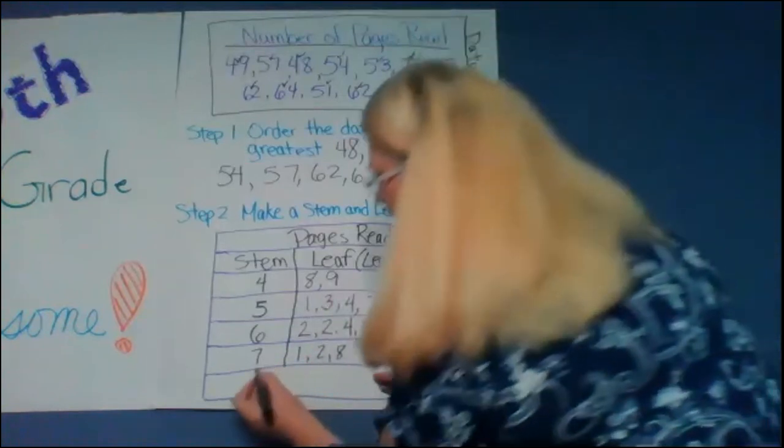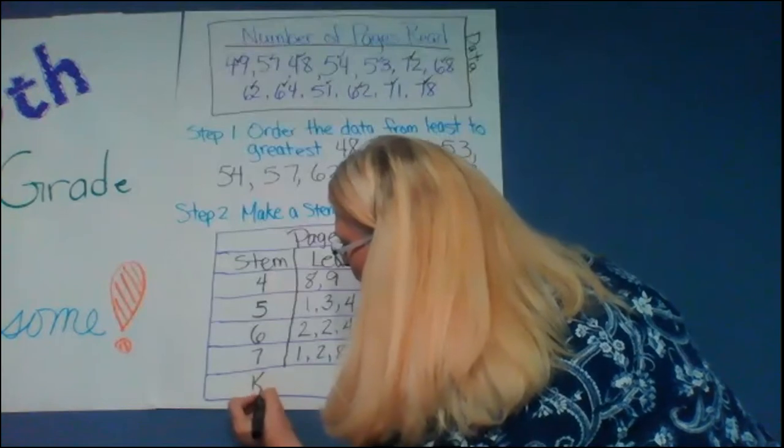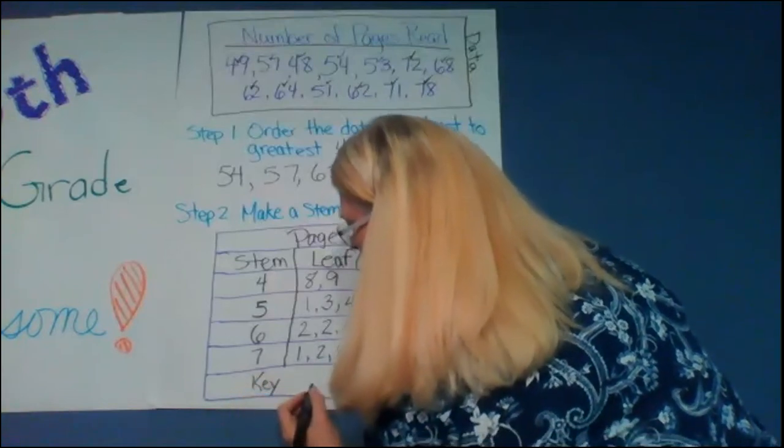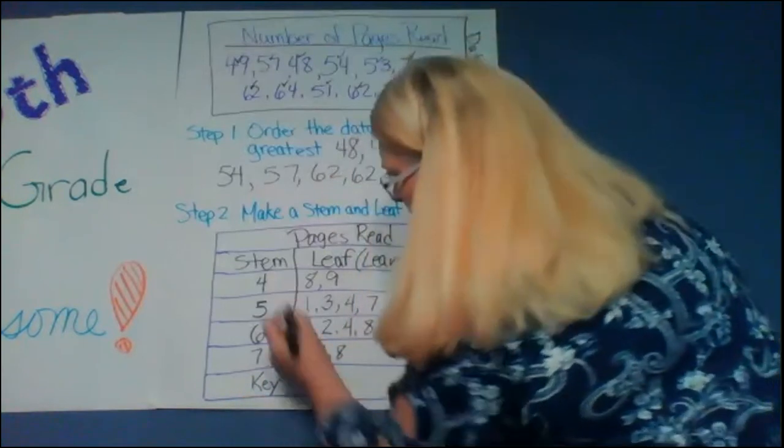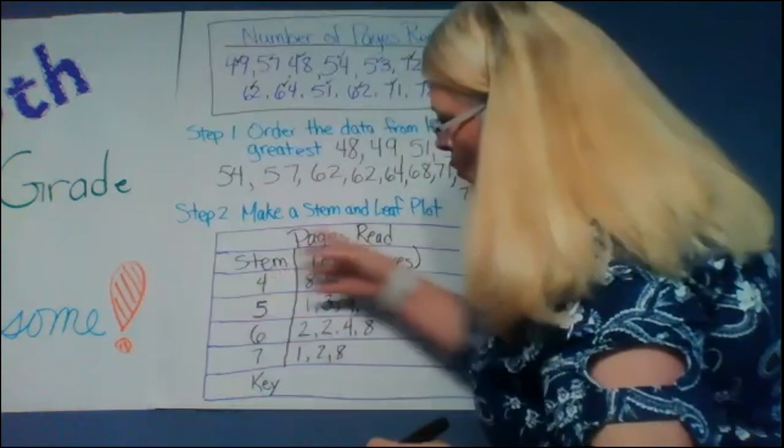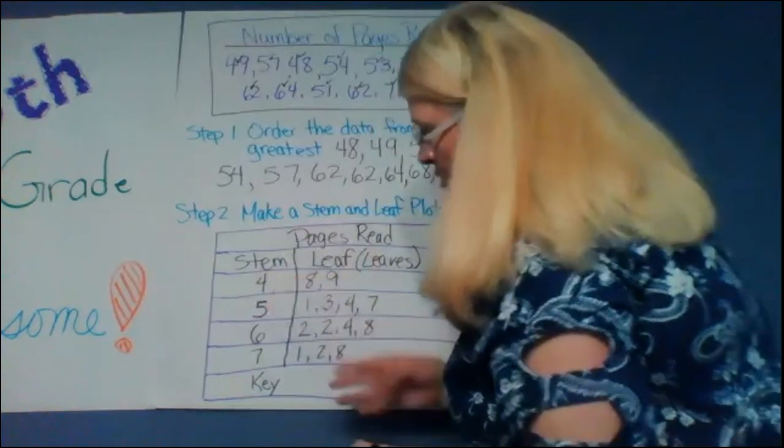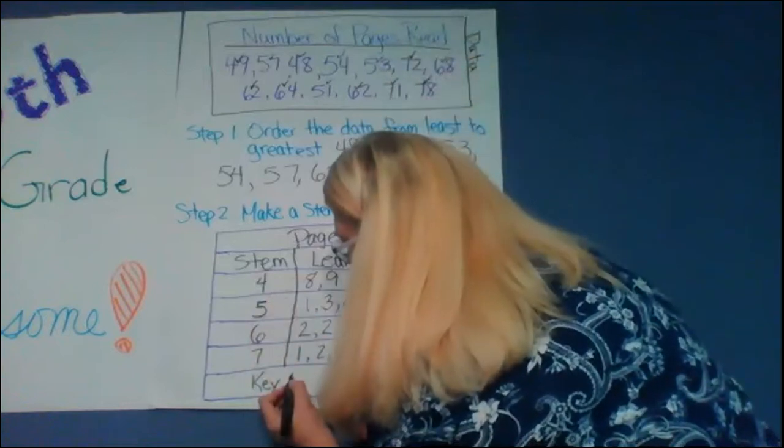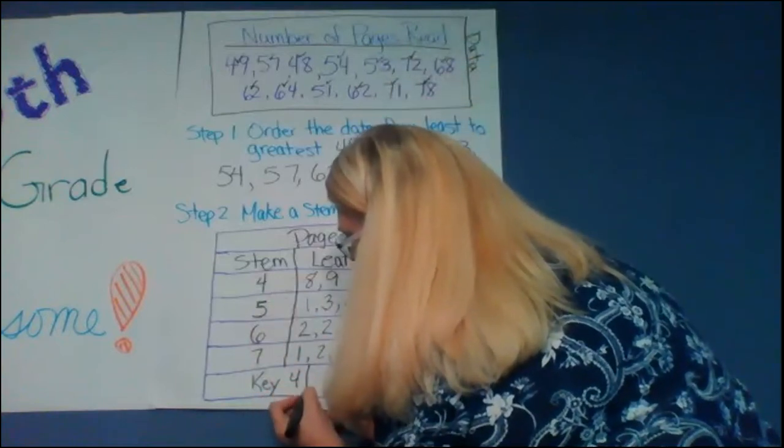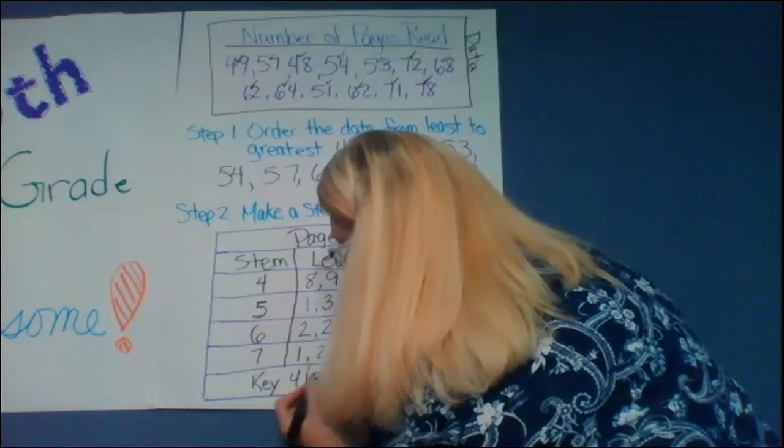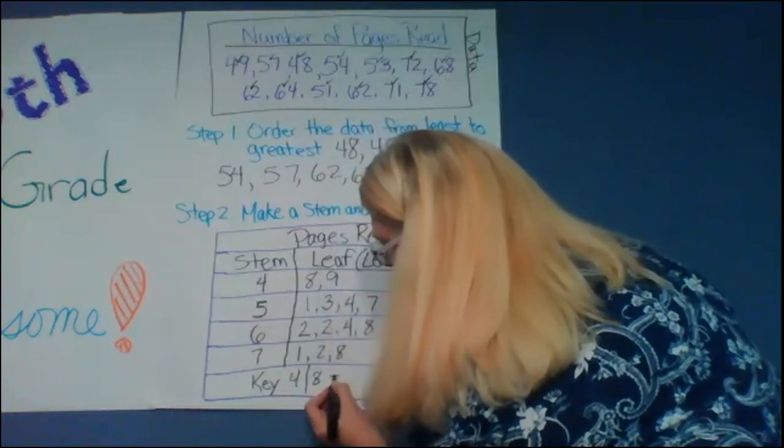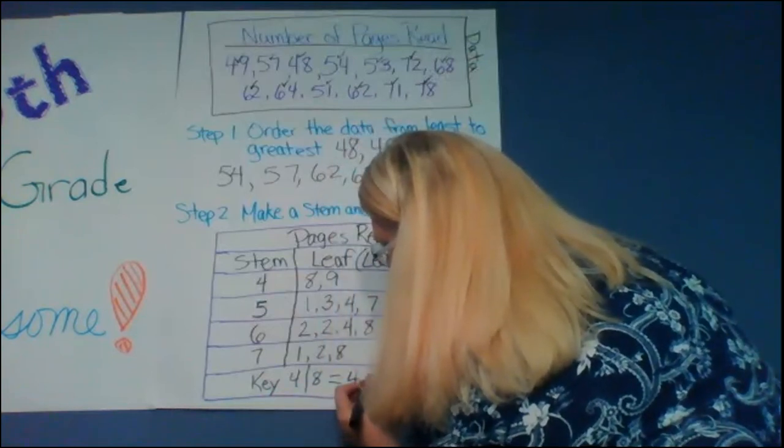And now I need to make my key. So I'm going to write key. My key is, and you can just pick one of the numbers that you already have up here. I'm going to start with my lowest number. My key is four line eight. So stem and leaf equals 48.